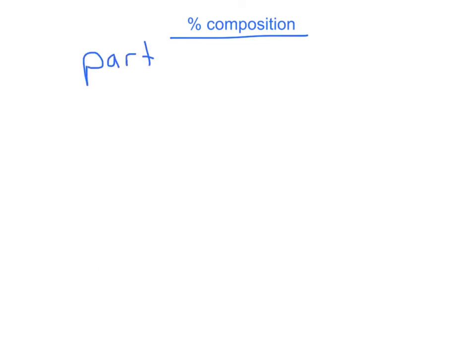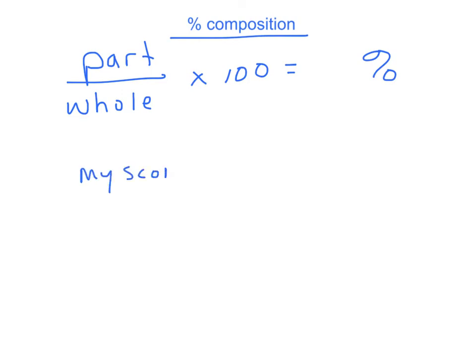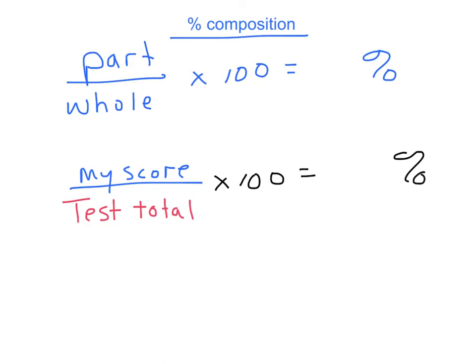Percent composition is another thing you need to know. All you have to remember is it's the part divided by the whole, times one hundred — just like finding your percent on a test: your score divided by the test total, times one hundred. Put the part on top, divide by the whole, times by one hundred, and get your percent.